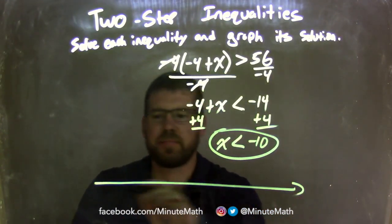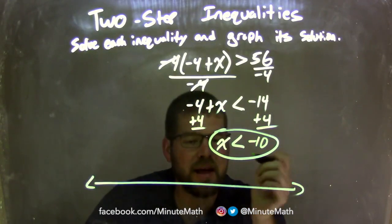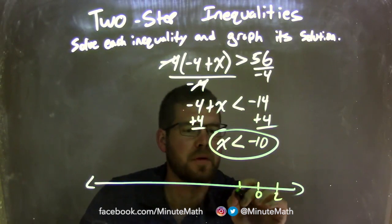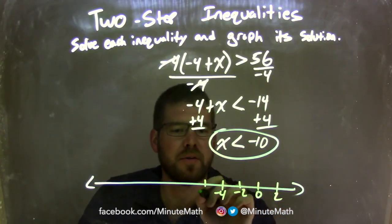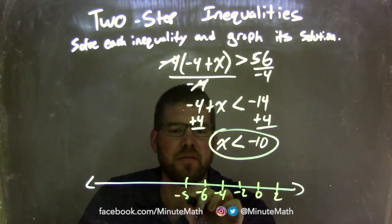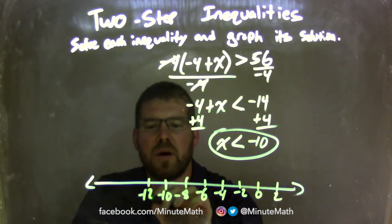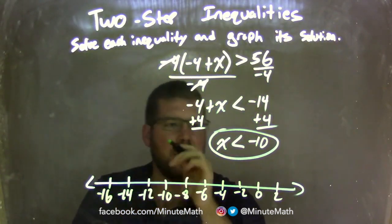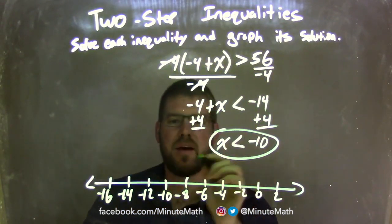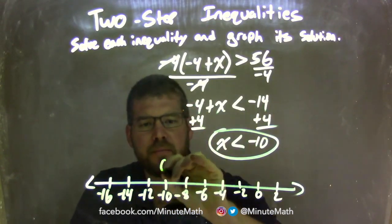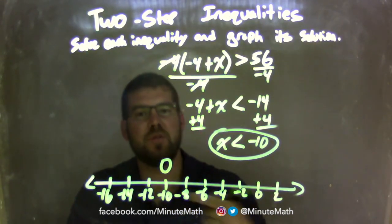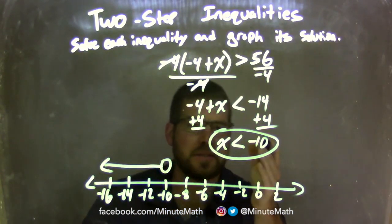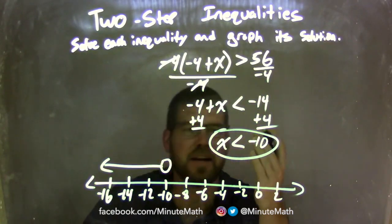Now I need to graph it. x is less than negative 10. Let's put 0 here and go by 2s: negative 2, negative 4, negative 6, negative 8, negative 10, negative 12, negative 14, negative 16. Since x is just less than negative 10, I have an open circle at negative 10, and then we shade to the left because x is less than all those values. The graph matches x is less than negative 10.